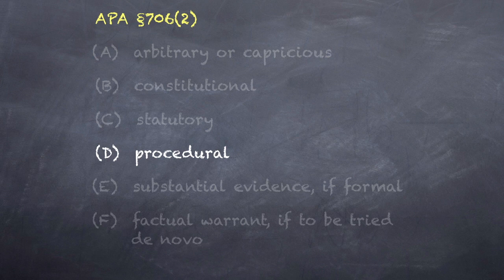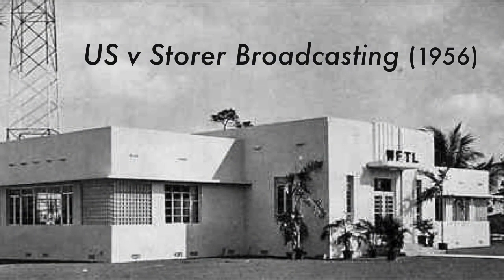We need now to appreciate how there can be interaction between different types of procedure. An adjudicative procedural right that one would otherwise enjoy can be erased if the agency has exercised rulemaking power in certain ways. Let's now look at the Storer Broadcasting case. Storer involves the Federal Communications Act, which gives the FCC both licensing and rulemaking powers. Recall that the APA states that licensing is an adjudicatory process. In Storer, the challenged agency action was the FCC's promulgation of a rule.